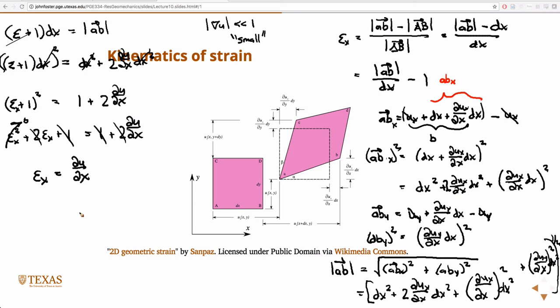So the two-dimensional definition of the x component of strain is identical to the one-dimensional component. Partial u partial x.